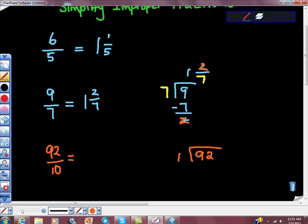We'll do 92 divided by 10. And we know 90 divided by 10 is 9. So 9 is 90. 92 minus 90 is 2. Right?